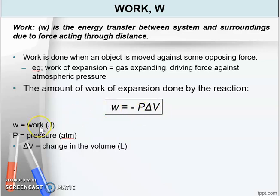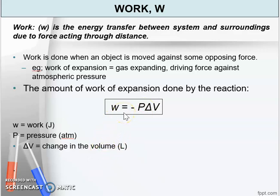The formula is W equals negative P delta V. W is work in joules, P is pressure in atm, and delta V is the change in volume. When using this formula, the unit for delta V must be in liters.